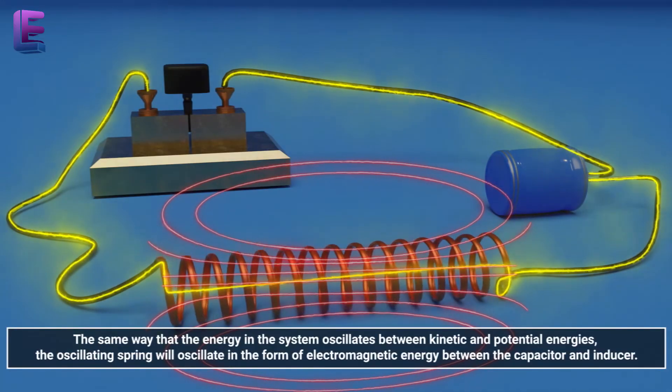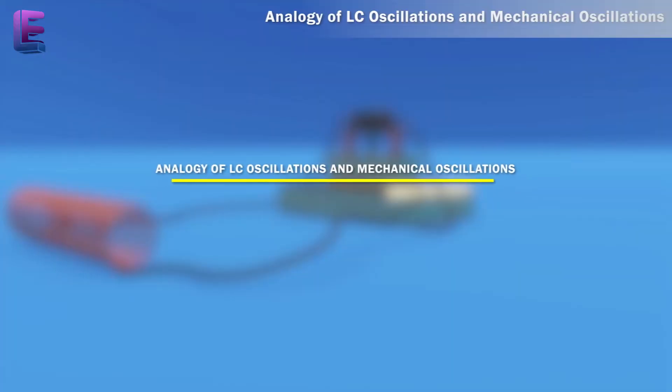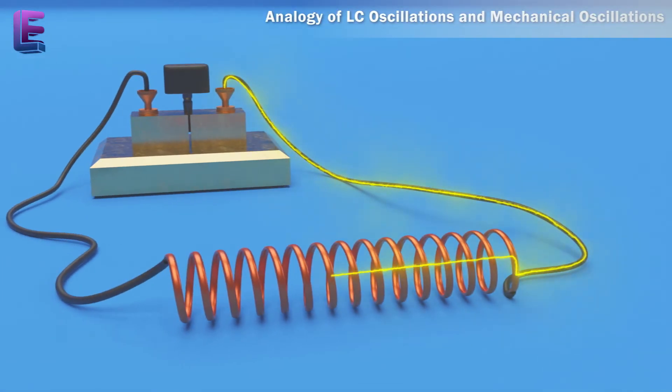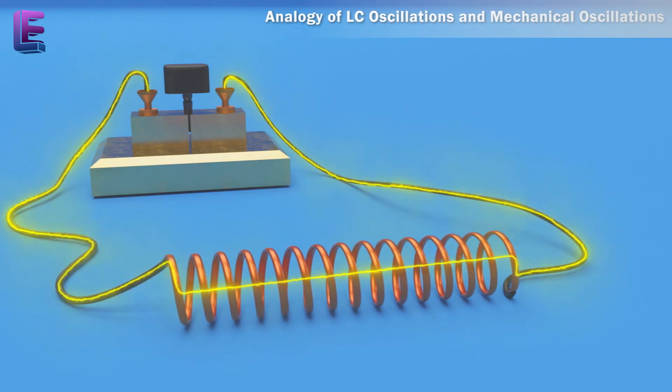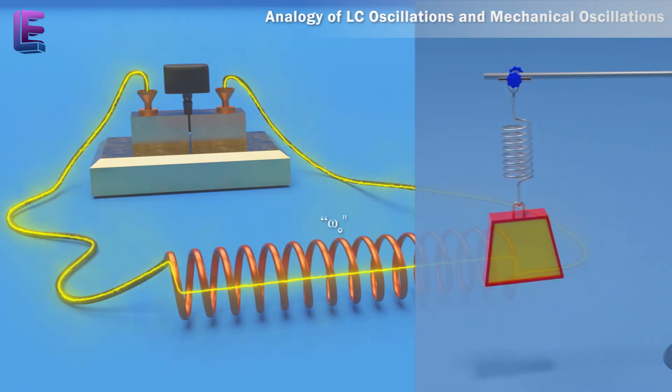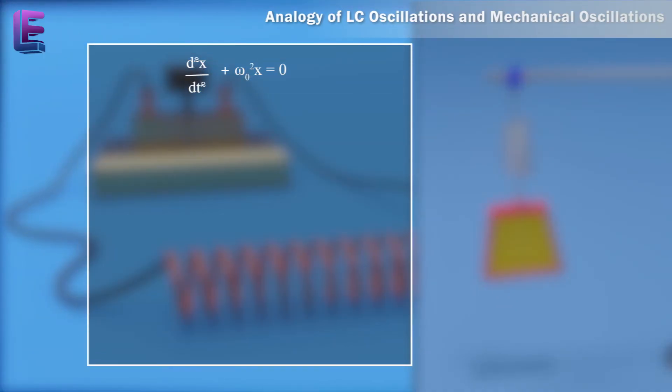Analogy of LC oscillations and mechanical oscillations. The LC oscillation is similar to the mechanical oscillation of a block attached to a spring. For a block of a mass m oscillating with frequency omega-0, the equation is d square x by dt square plus omega-0 square x equals zero.